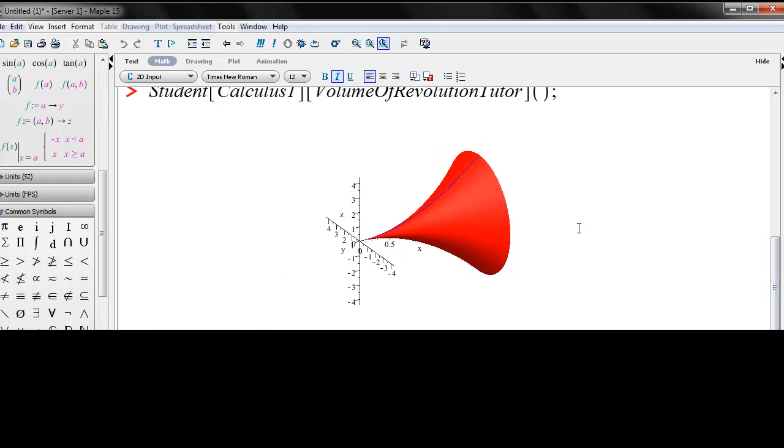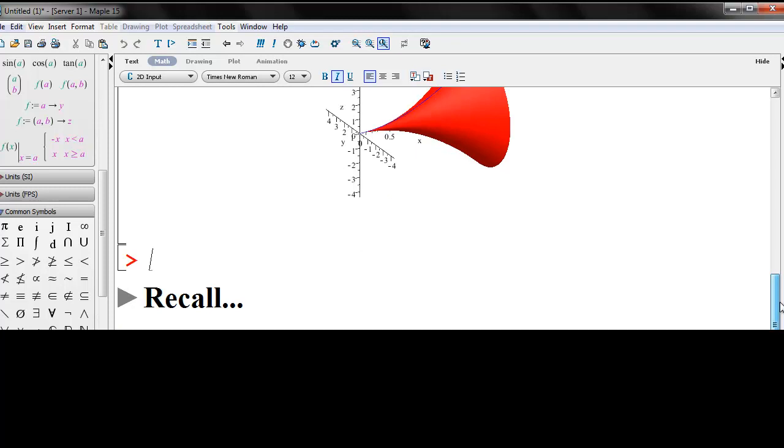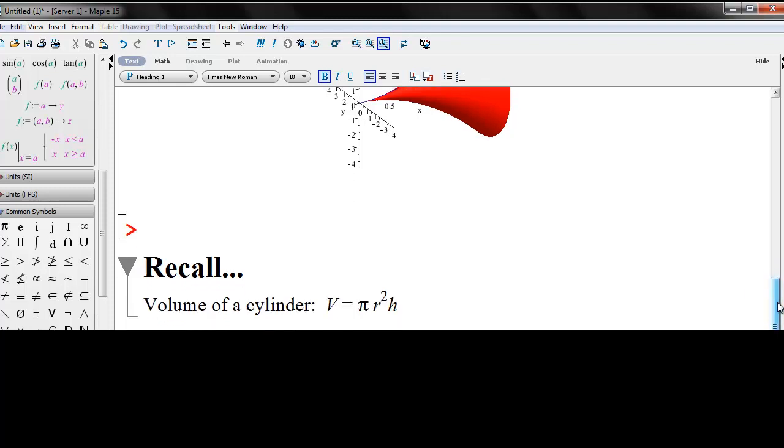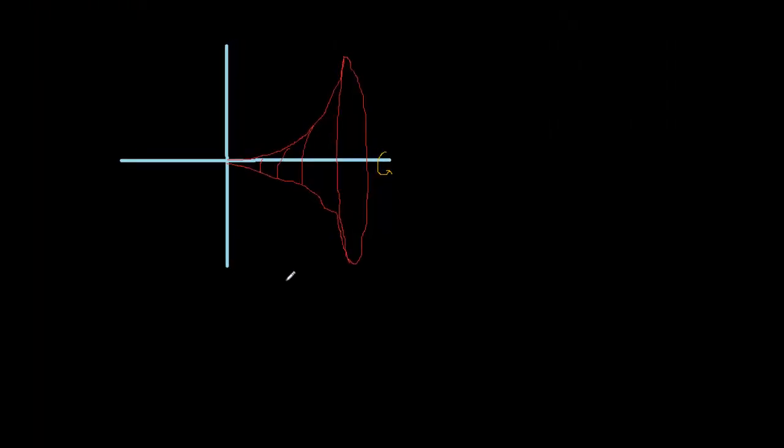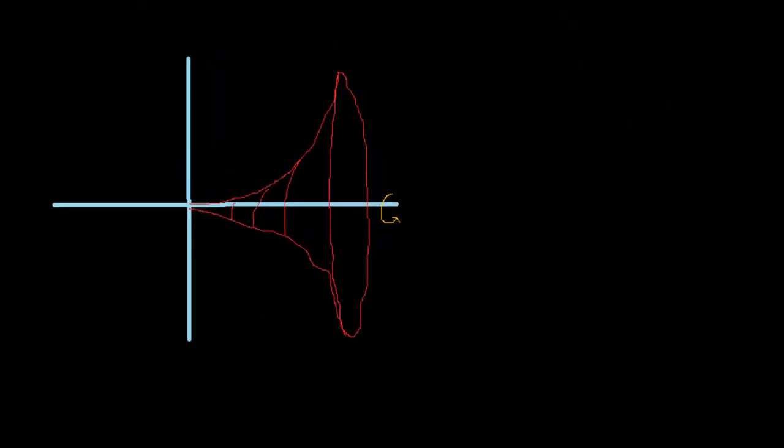Now, before we get going here with using our tools of calculus, let's recall the volume of a cylinder. The volume of a cylinder is volume equals pi r squared times the height. So I'm going to hop back over here to my drawing.